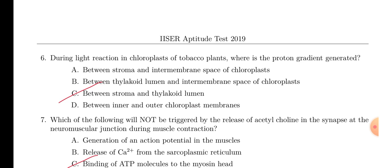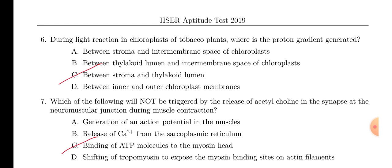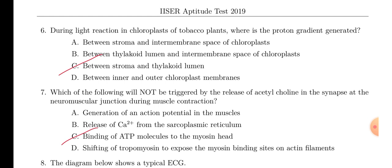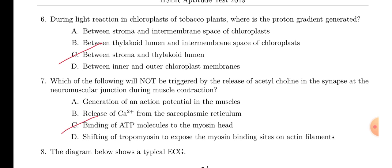Question number 6. You have to find out the proton gradient which is formed in chloroplast. We know that protons are accumulated in thylakoid lumen. And from there, it comes into the stroma and forms the ATP. So, option C will be the answer.